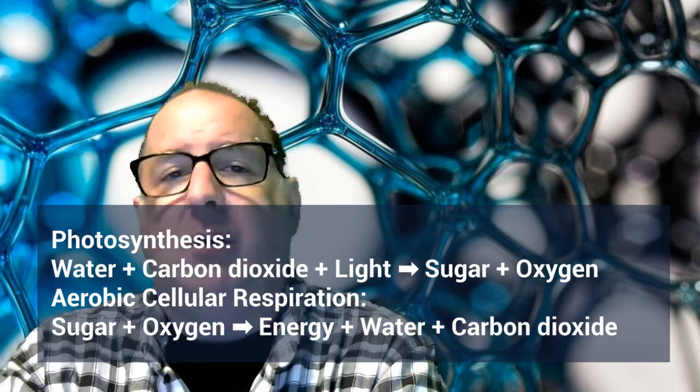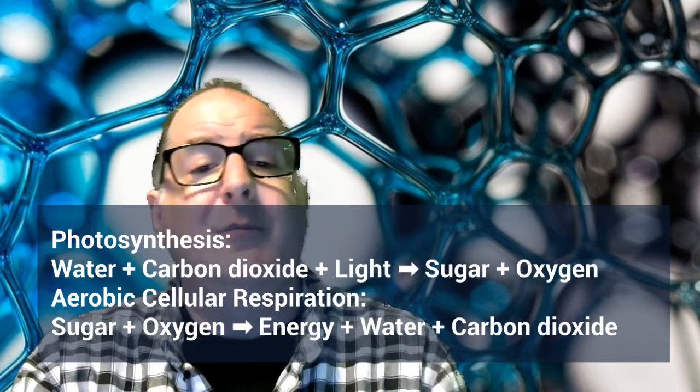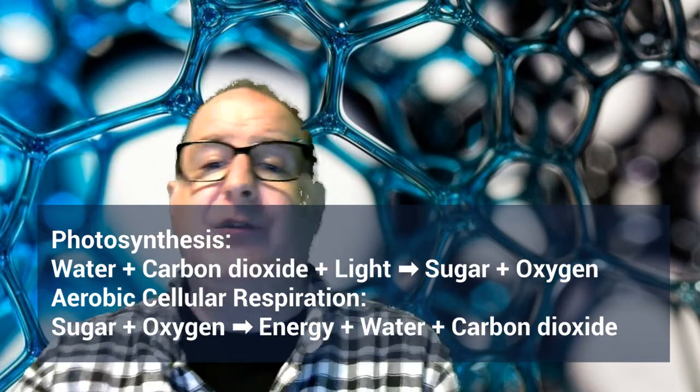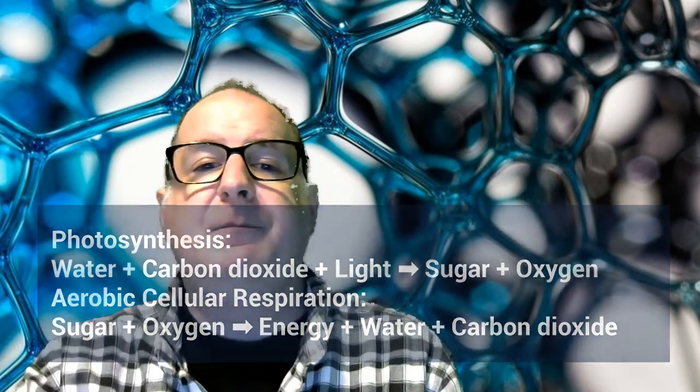They're reflections of each other. One uses water and carbon dioxide. The other makes it. One makes oxygen. The other uses it. When plants make sugar and oxygen that they don't use to grow, they can be used by animals to do aerobic cellular respiration with. And the water and carbon dioxide that's made by aerobic cellular respiration and just tossed out is used by plants to do photosynthesis.